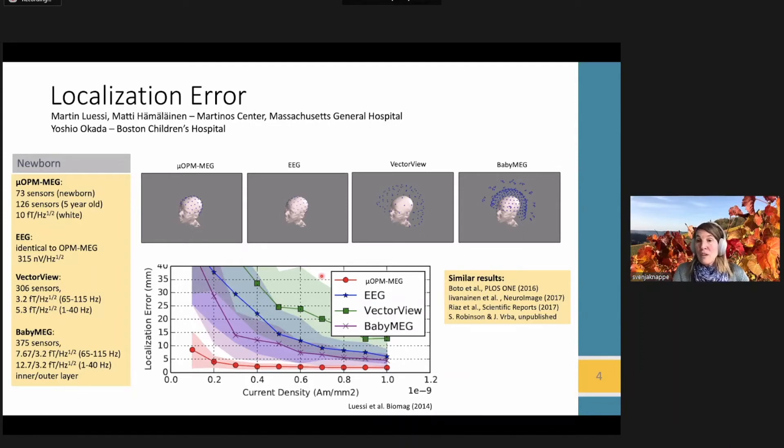And what that means for MEG kind of shows this study by my colleagues from Boston where they simulated the localization error as a function of current density. So strength of the dipole for a variety of different systems. The first one here is a system where we use these OPMs and they place them directly onto the scalp of the person compared to EEG, that's also on-scalp technology, compared to a standard MEG system. And then to one is a SQUID-based MEG system that's specifically made for five-year-old kids. And what you can see is that here, this is a study for a newborn, particularly the localization error remains very low when you can use these on-scalp OPMs as compared to the other technologies where the sensors are usually much further away from the head.